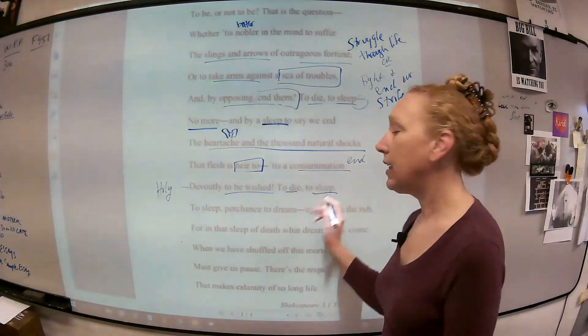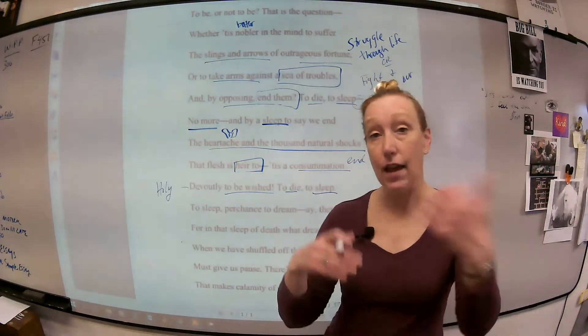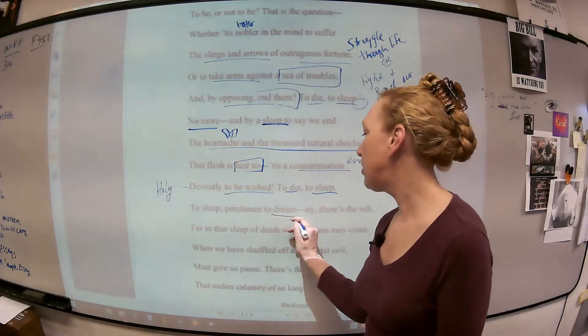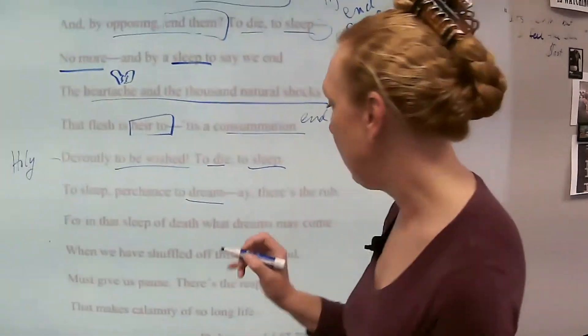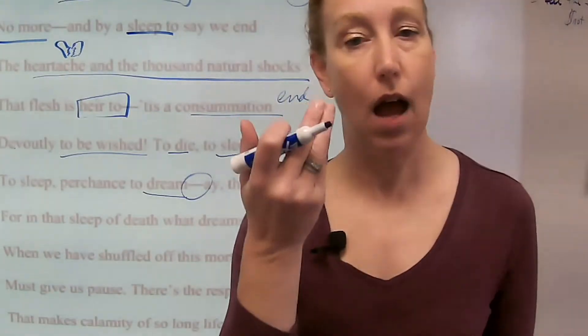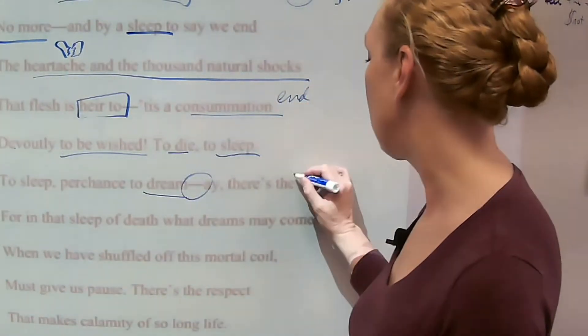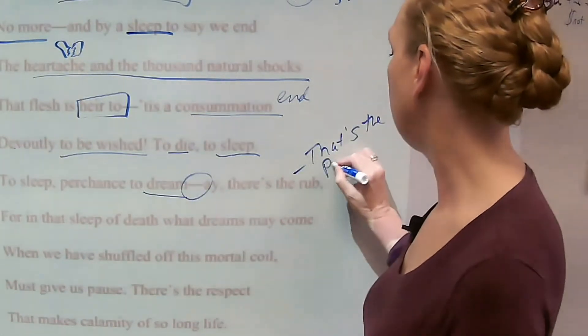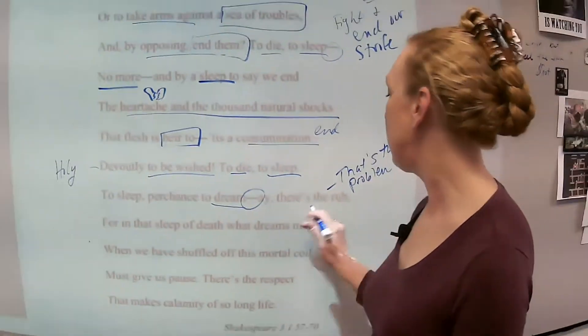To die, to sleep. He goes back to that again and says death would be like a sleep. And then he says to sleep, perchance to dream. And then what does he do? He interrupts himself again. Dashes are always interruptions in thoughts. There's the rub. That's the problem.